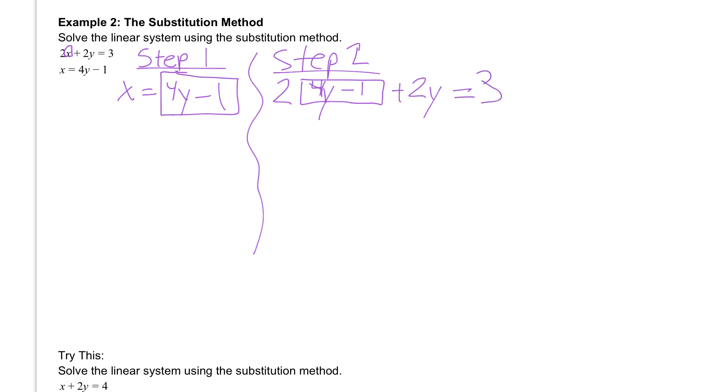Again, when you get to this point, you should be checking that you have the same variable. I have y's here and I have a y here. The box that I have is just like parentheses. So we're going to go ahead and distribute that 2. 2 times 4y will give us 8y. And then 2 times minus 1 is a negative 2. Plus 2y equals 3.